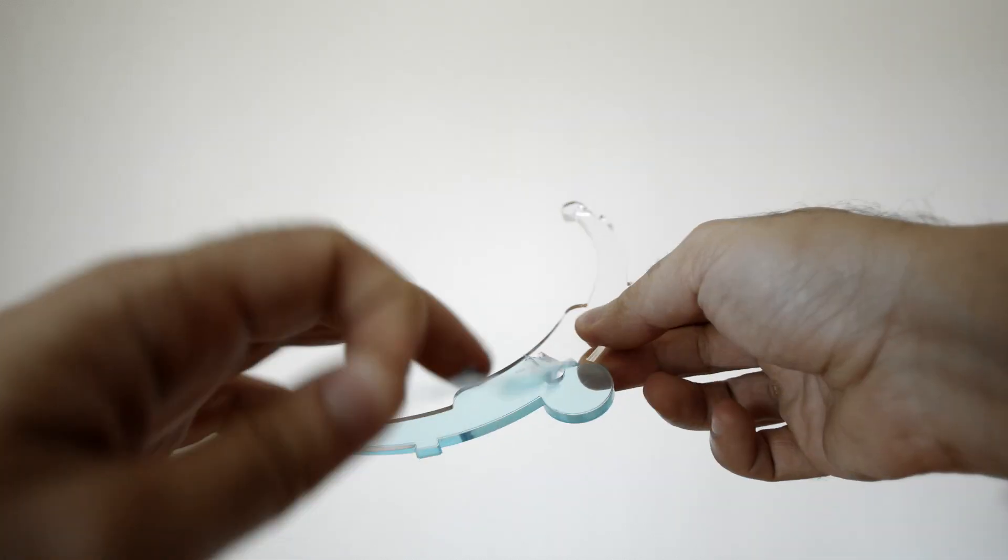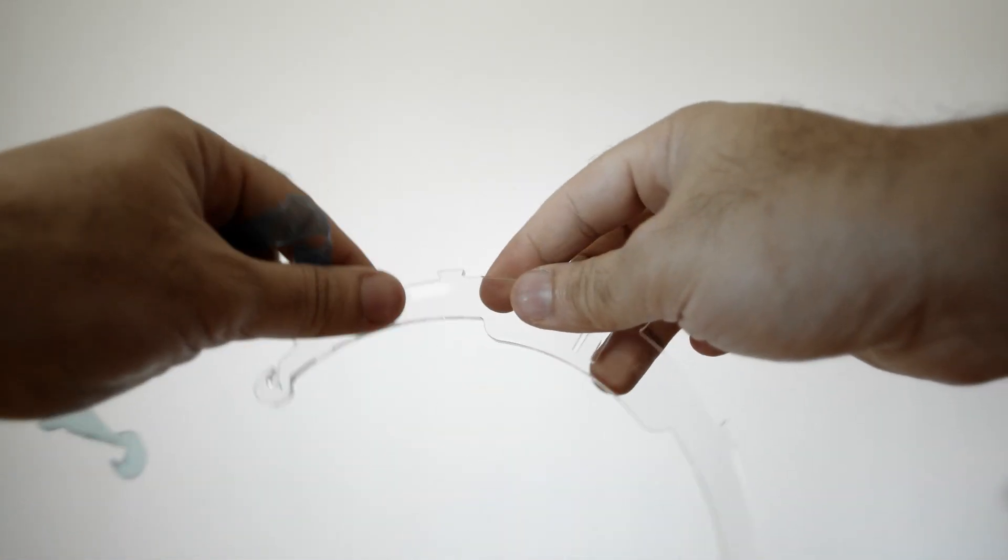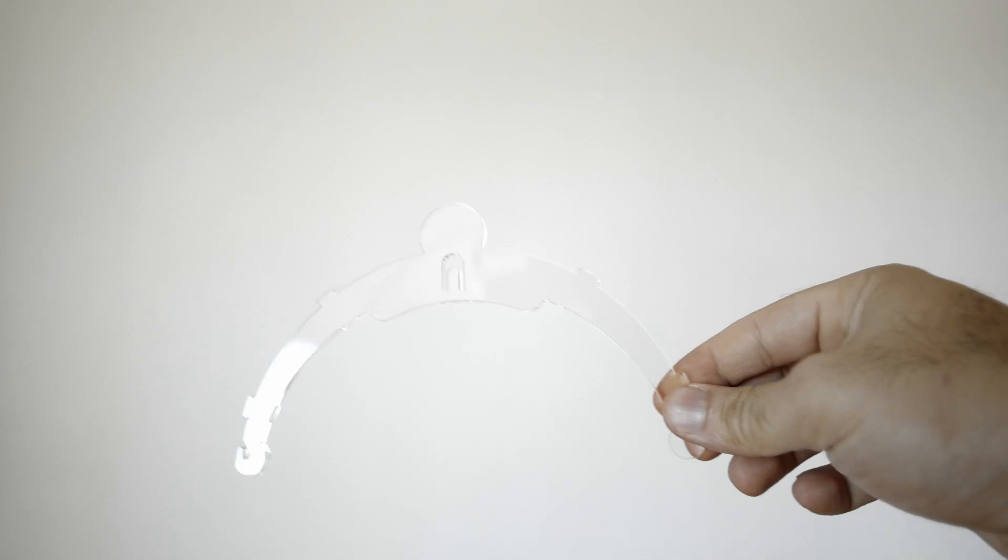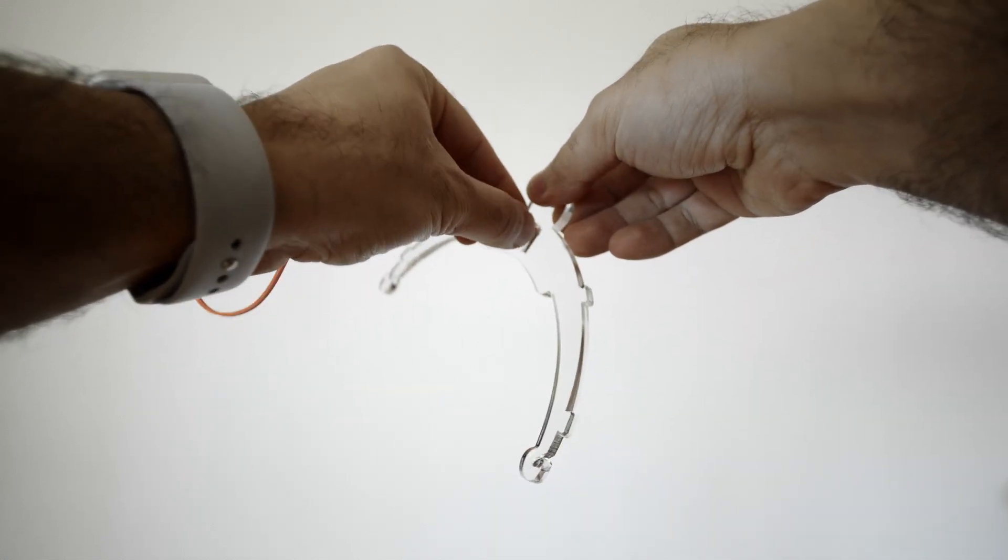With this design, I can roughly produce 80 face shields per hour. The plan is to make as many units as possible, and fast.